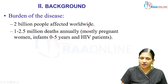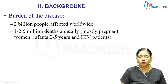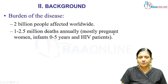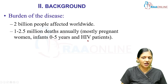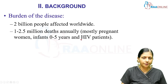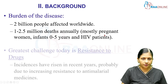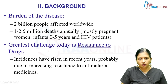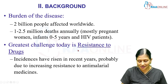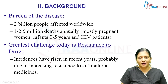The burden of disease is immense. Two billion people are affected worldwide and 1 to 2.5 million deaths happen annually. Most of these are pregnant women, infants aged 0 to 5 years, and HIV patients who have the maximum deaths due to malaria. Malaria causes more deaths in pregnant women compared to non-pregnant women. The problem with anti-malarial treatment is the development of resistance, and incidence of malaria has also risen in recent years because of this resistance.